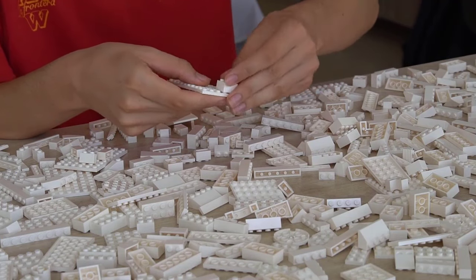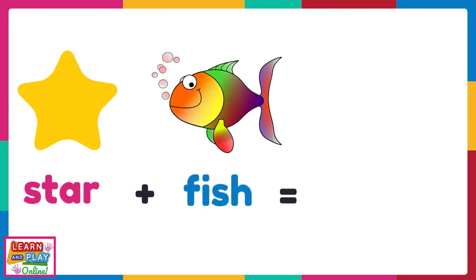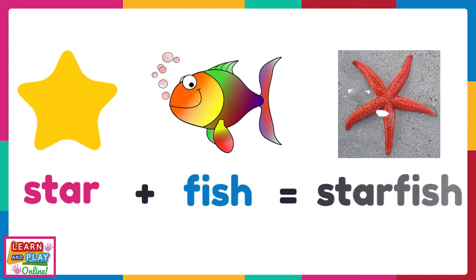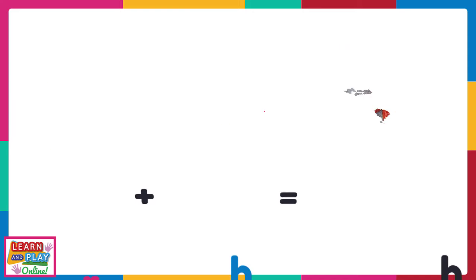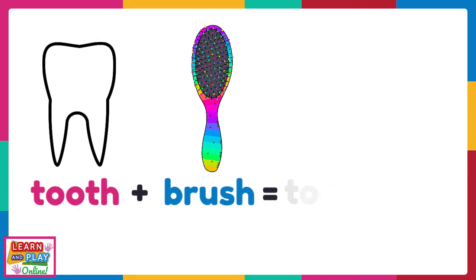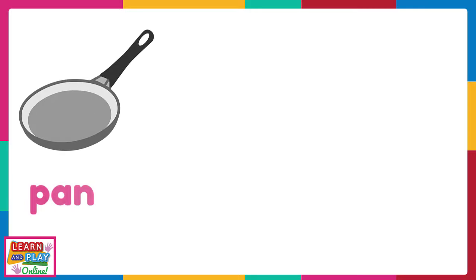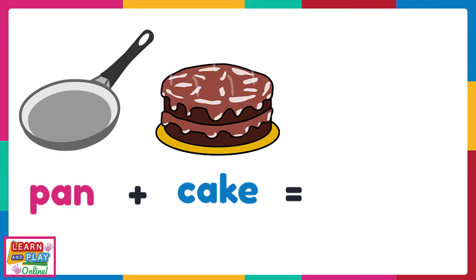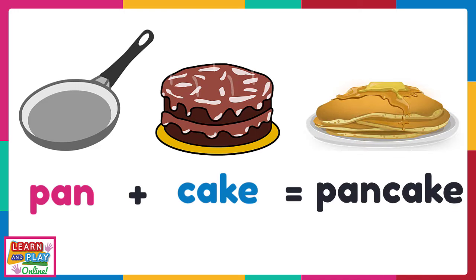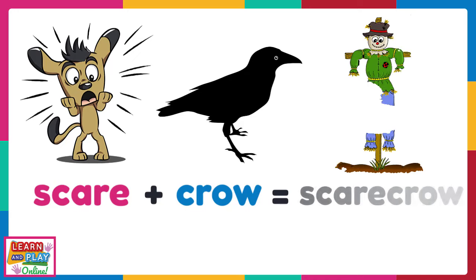Let's combine these next few words together to make compound words. Star and fish make starfish. Tooth and brush make toothbrush. Pan and cake make pancake. Scare and crow makes scarecrow.